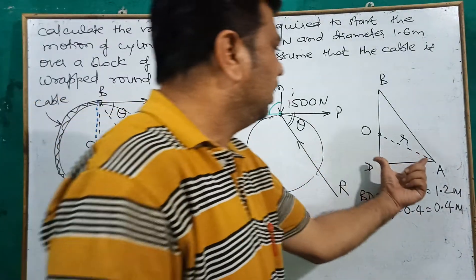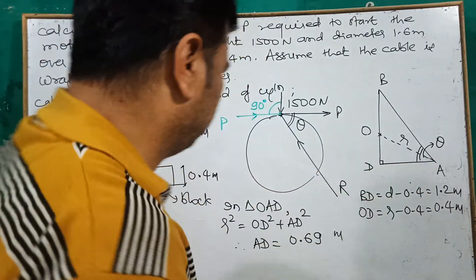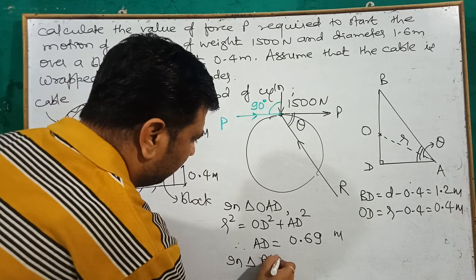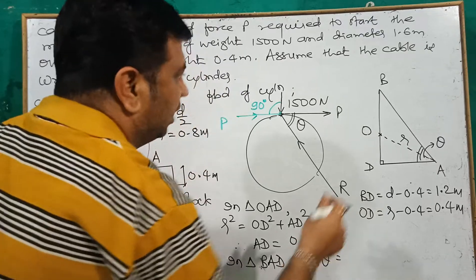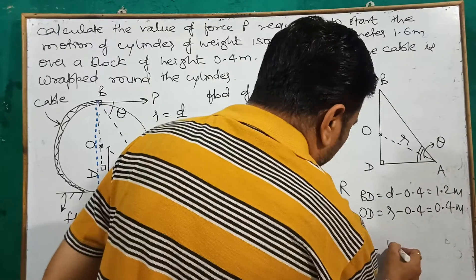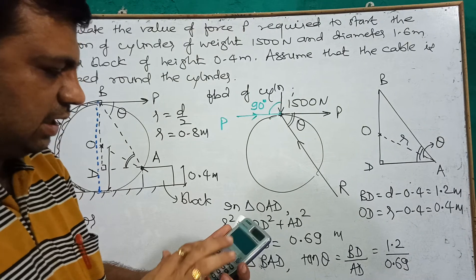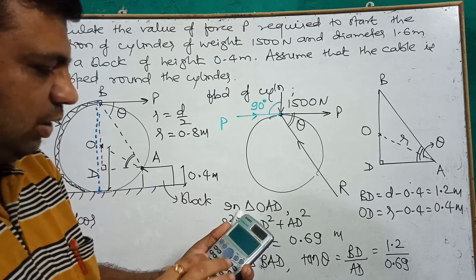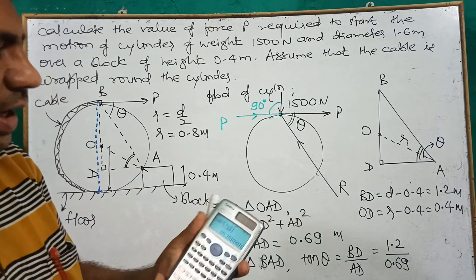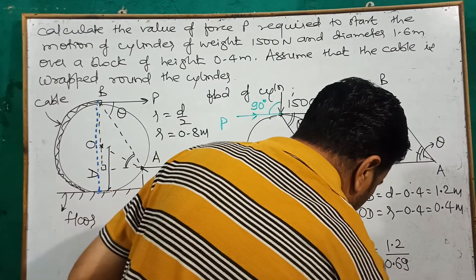We don't need AD alone — we need the full angle theta. In triangle BAD, tan θ = opposite/adjacent = BD/AD = 1.2/0.69. So θ = tan⁻¹(1.2/0.69) = 60.1 degrees. This is the key result: theta is 60.1 degrees.